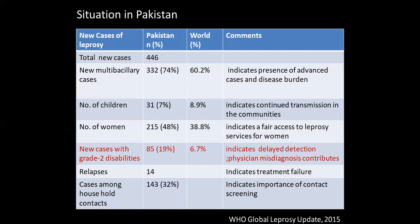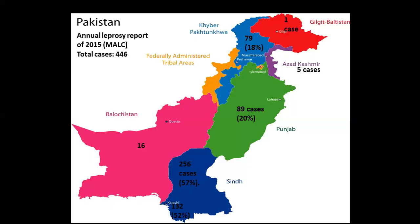In Pakistan, there are new multibacillary cases in which children, adults, those with grade 2 disabilities, and relapses are all present. The percentage of leprosy in different provinces of Pakistan shows that in Sindh it is the highest number, and out of that, in Karachi it is the highest — 52%.